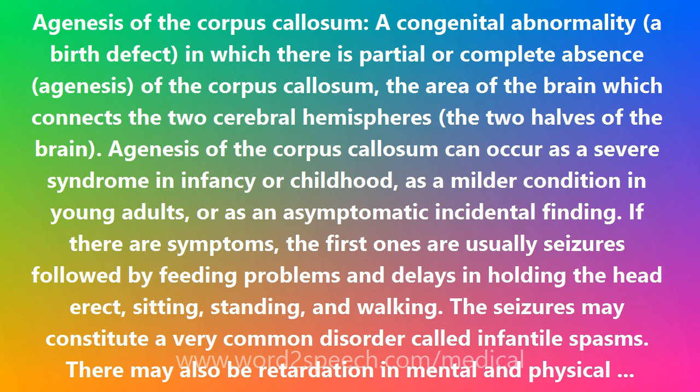Agenesis of the Corpus Callosum can occur as an isolated condition or in association with other cerebral anomalies, such as the Arnold-Chiari malformation and Dandy-Walker syndrome, Anderman syndrome with progressive neuropathy, schizencephaly, holoprosencephaly, and migrational anomalies. It is also associated with several chromosome anomalies, including trisomy 13 and trisomy 18.